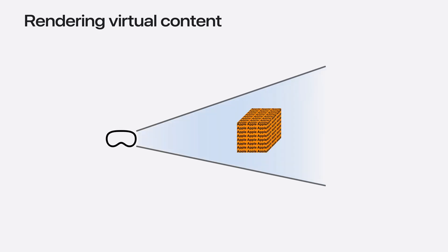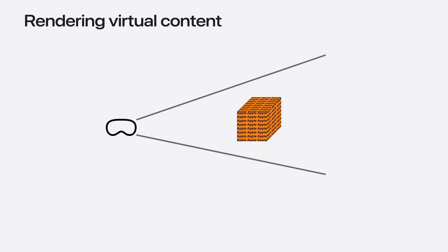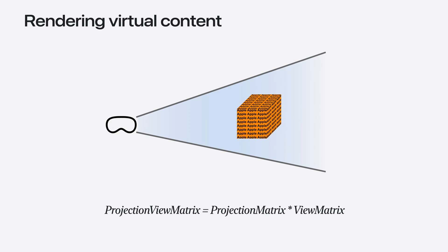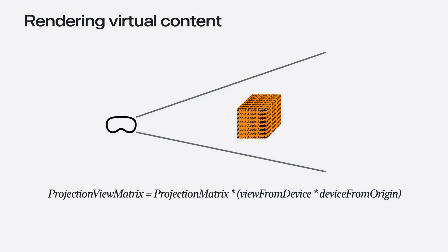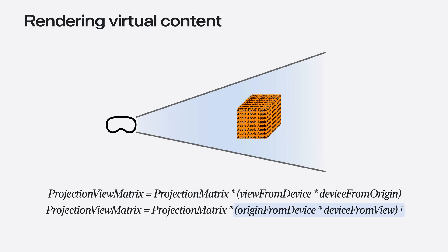When rendering objects with respect to the location and orientation of Vision Pro, you will transform your content from 3D world space to a 2.5D space, also known as normalized device coordinate space. This is called the projection view matrix. The projection view matrix is a combination of the projection matrix and the view matrix. The view matrix can be expanded into two transforms: first, a transform which brings the origin space to the device space, called device from origin; and second, a transform which brings device space to the view space, called view from device. To match the VisionOS API, the projection view matrix equals the projection matrix times the inverse of origin from device, multiplied by device from view.